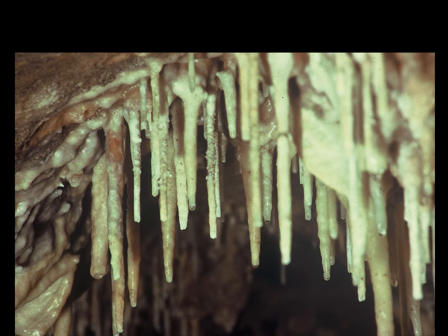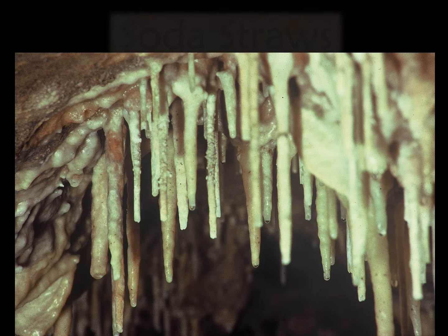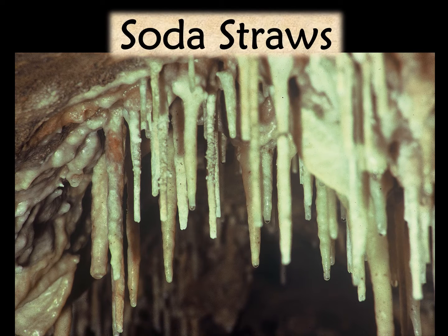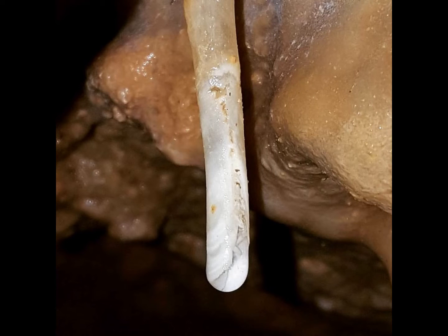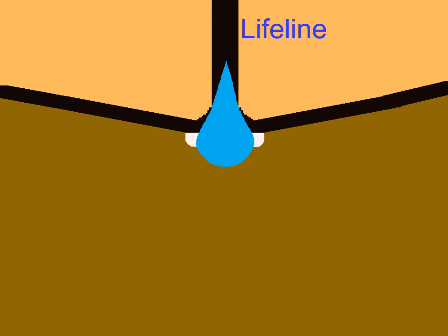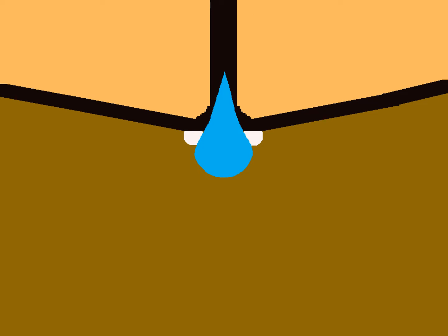These fragile, hollow tubes are named after something that you drink your milk through at lunch — soda straws. Soda straws are beginning or first-stage stalactites. They are so fragile, if you touch or bump them, they would probably break. They form down from the ceiling when water deposits a small amount of calcite in a ring on the ceiling, continuing with one drop of water and one ring of calcite at a time.